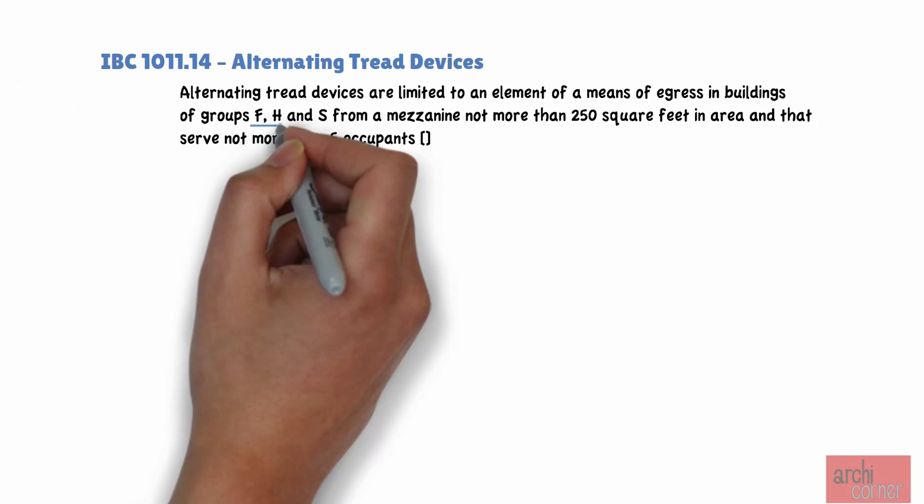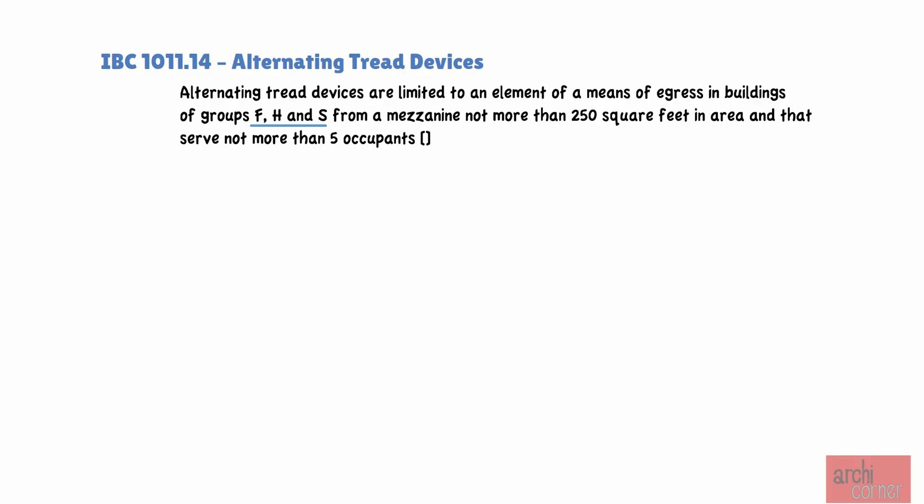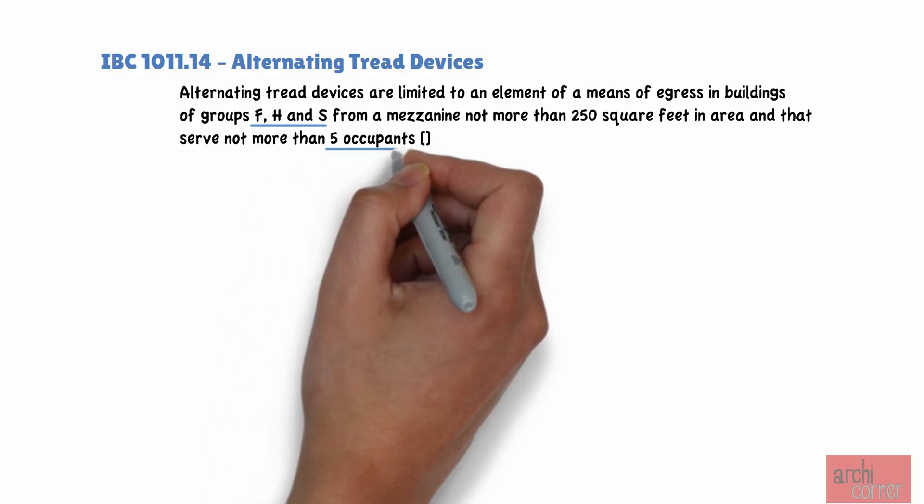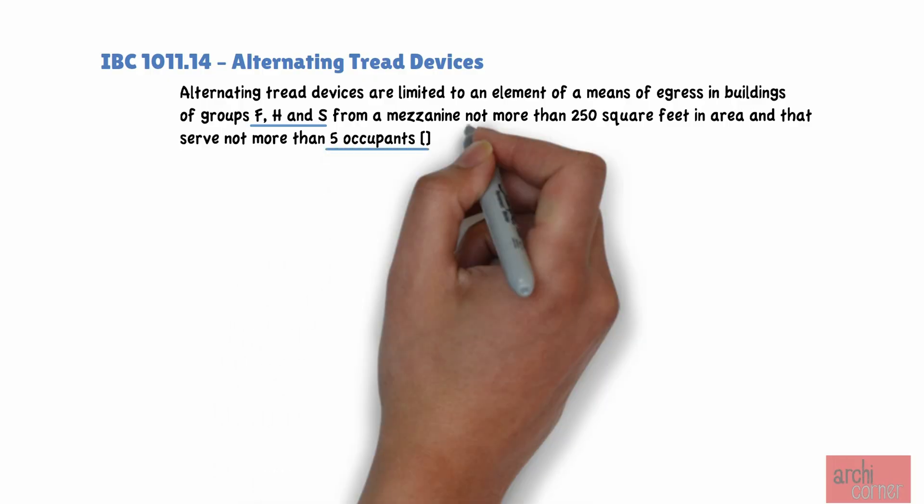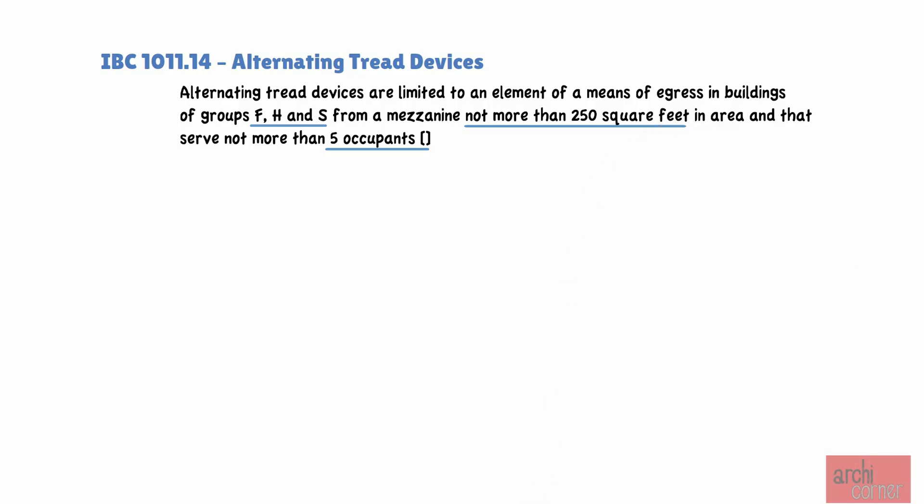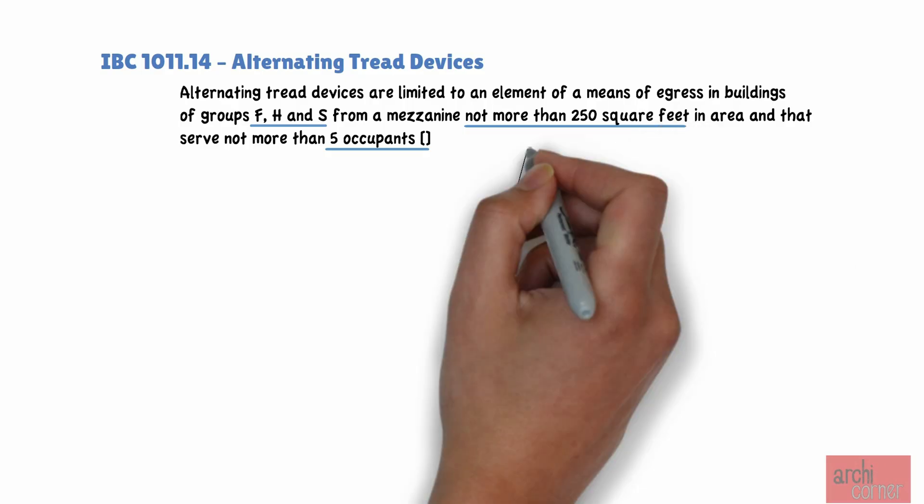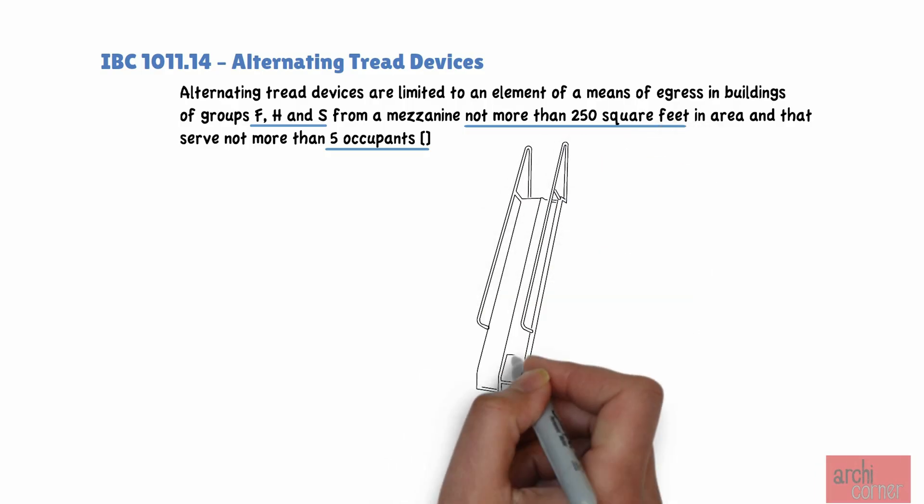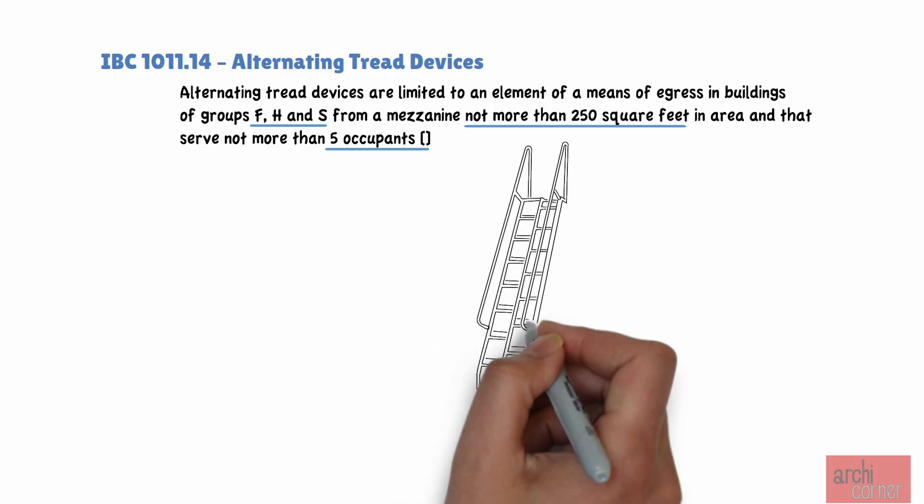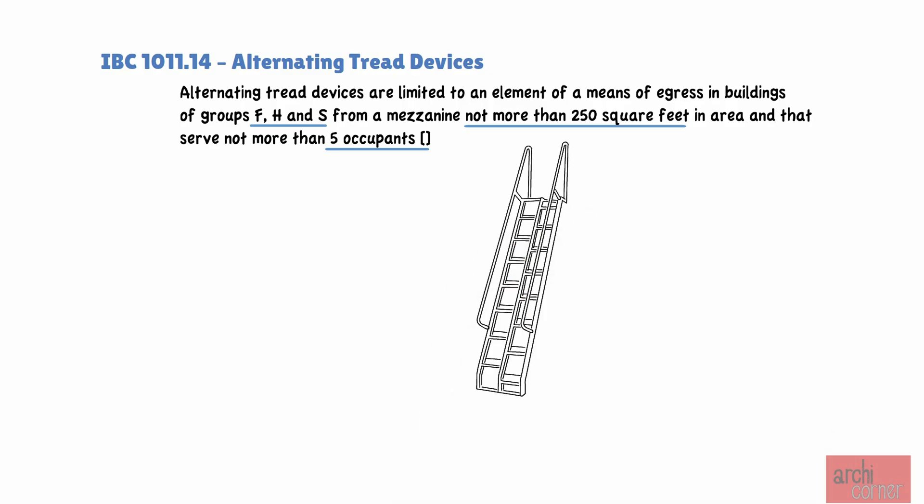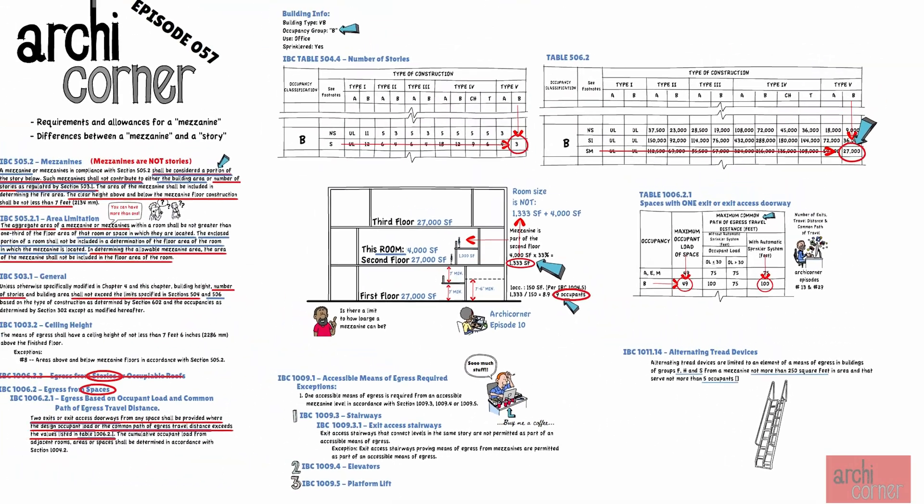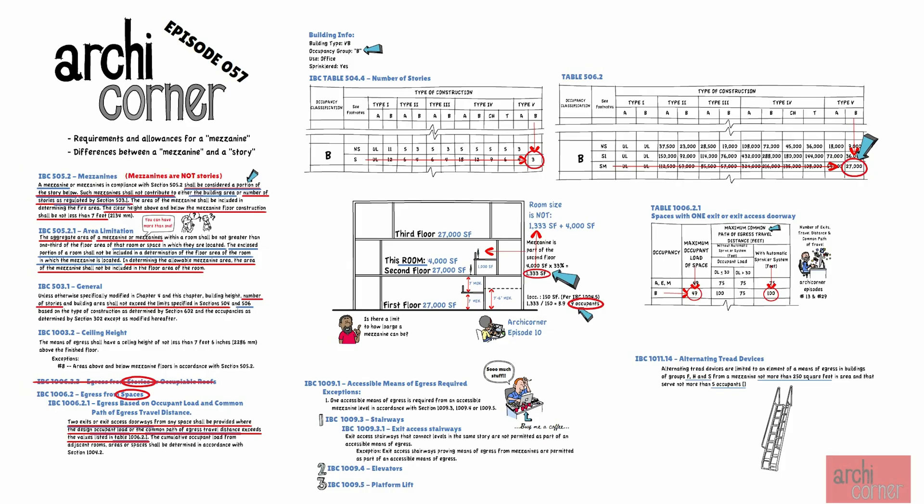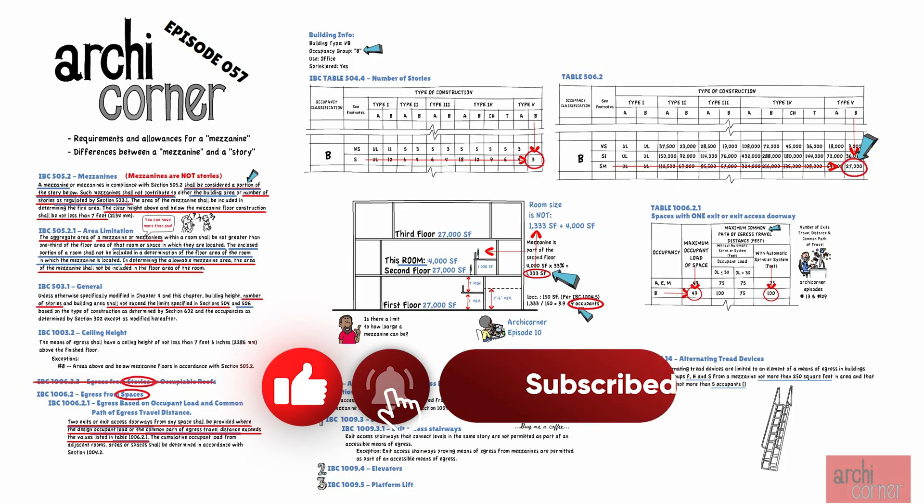But if we were an F, H, or S occupancy, and we had no more than 5 occupants, and we had no more than 200 square feet, then we could have an alternating stair device, which looks something like this. And well guys, that is it. You made it. Congratulations. Now you know all the basics on mezzanines. I hope you liked this video. I'll see you on the next one. But until then, this is Archi Corner, signing out.